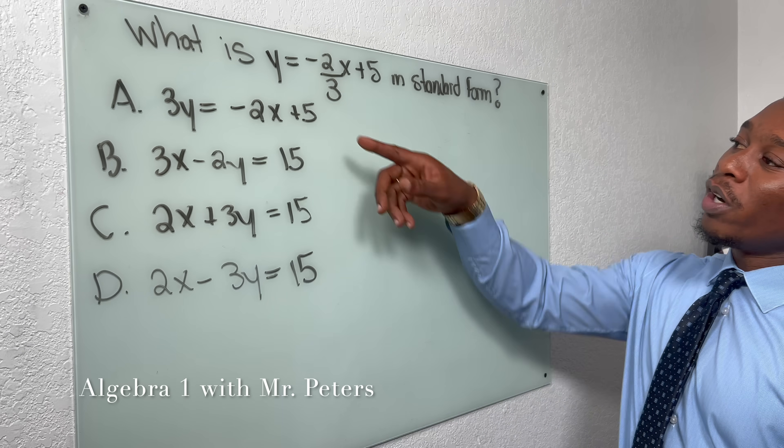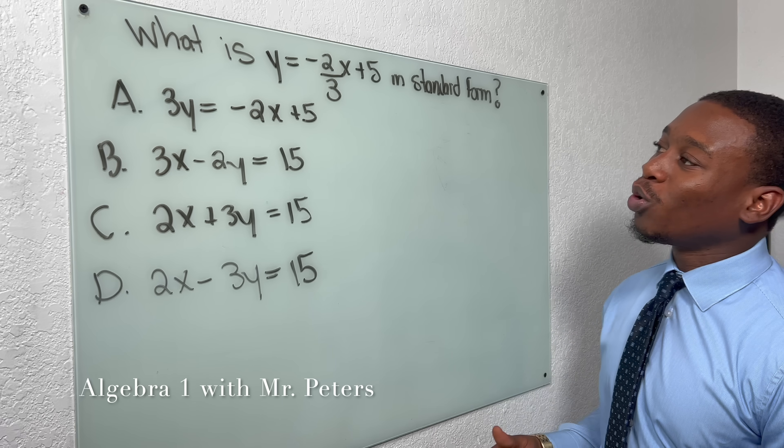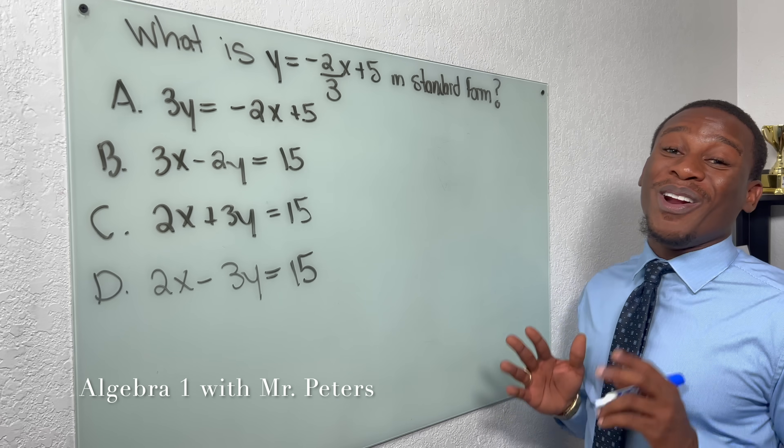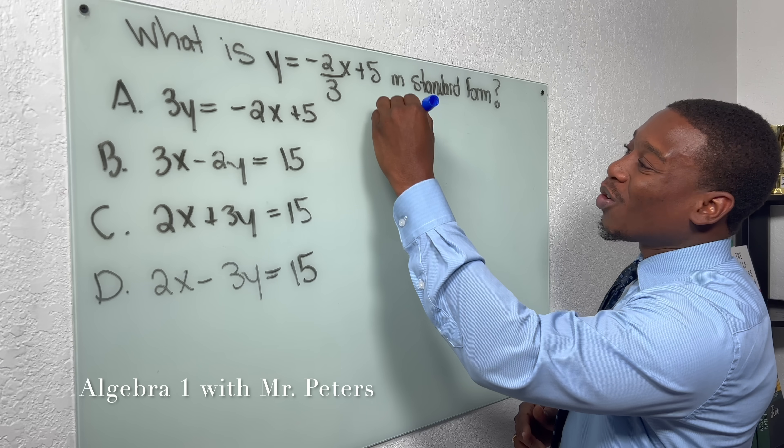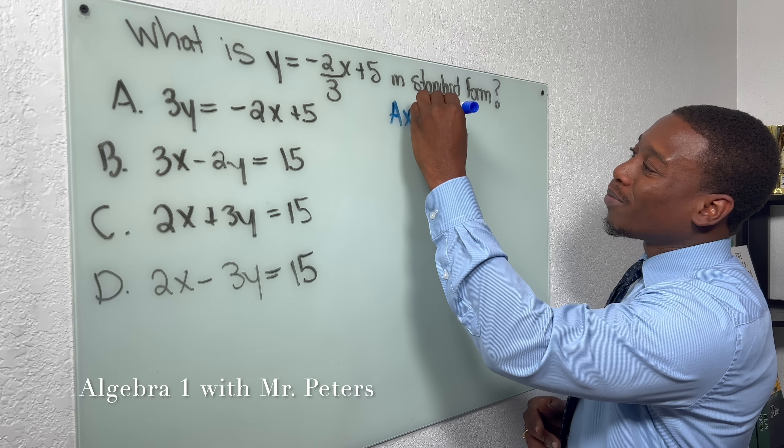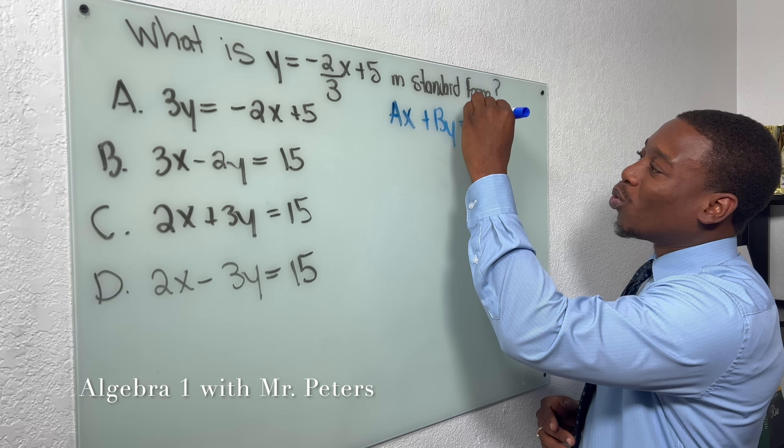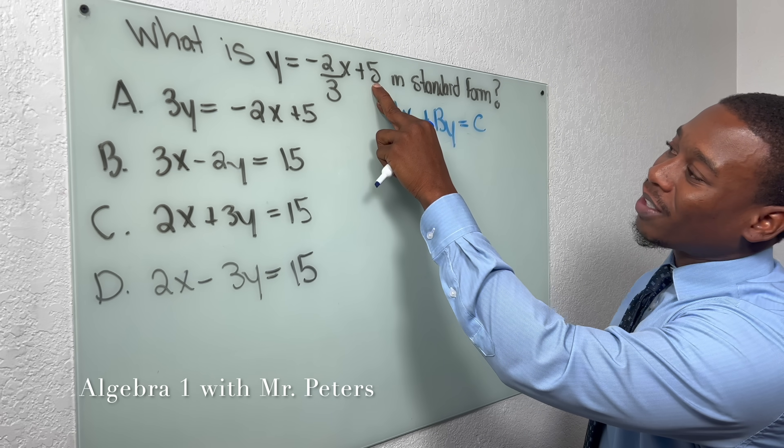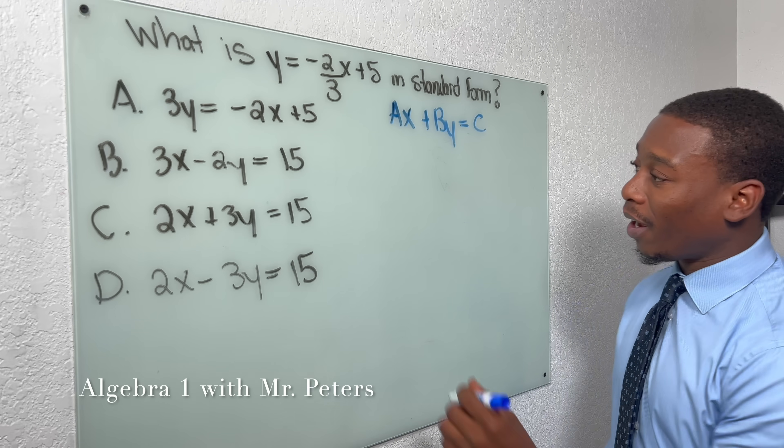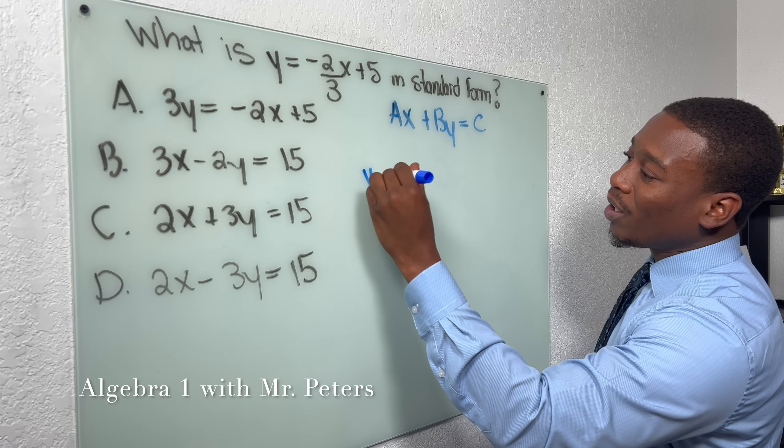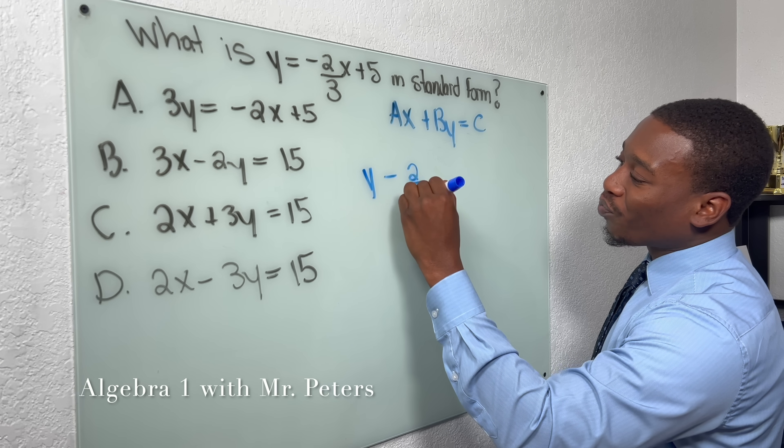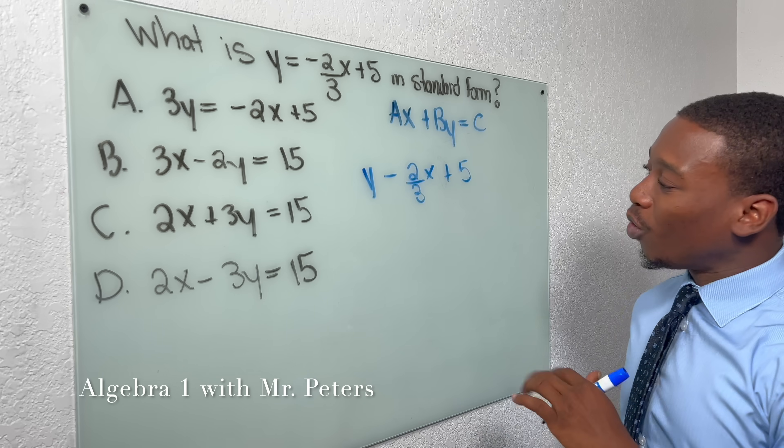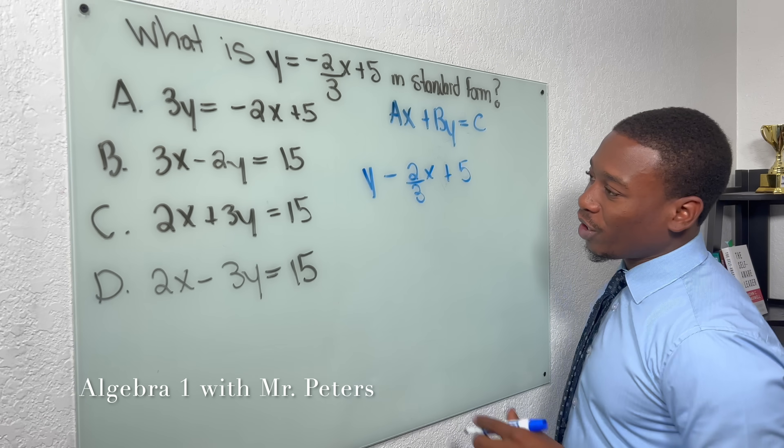So this problem asks us, what is y = -2/3x + 5 in standard form? First, we got to know what standard form is. So it's just an equation. Ax + By is equal to C. So we're basically trying to get this constant by itself and have x and y on the same side. So how can we do this? Let's just go straight to it.